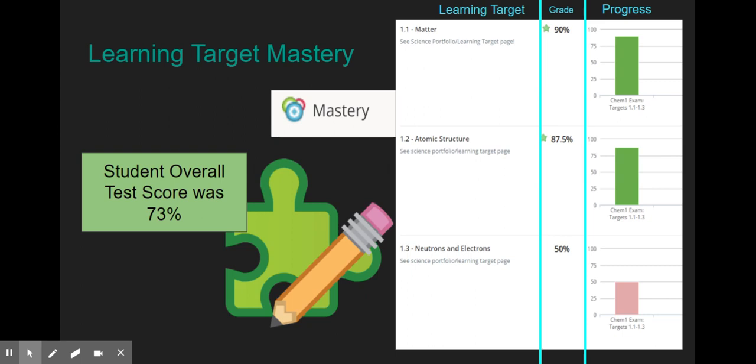On the left side is the learning target, and that's important to know because that's what's going to go in the grade book. In the middle is the overall grade that the student's going to get, and on the right is the progress, which also tells you which exam or which test that target was assessed on.